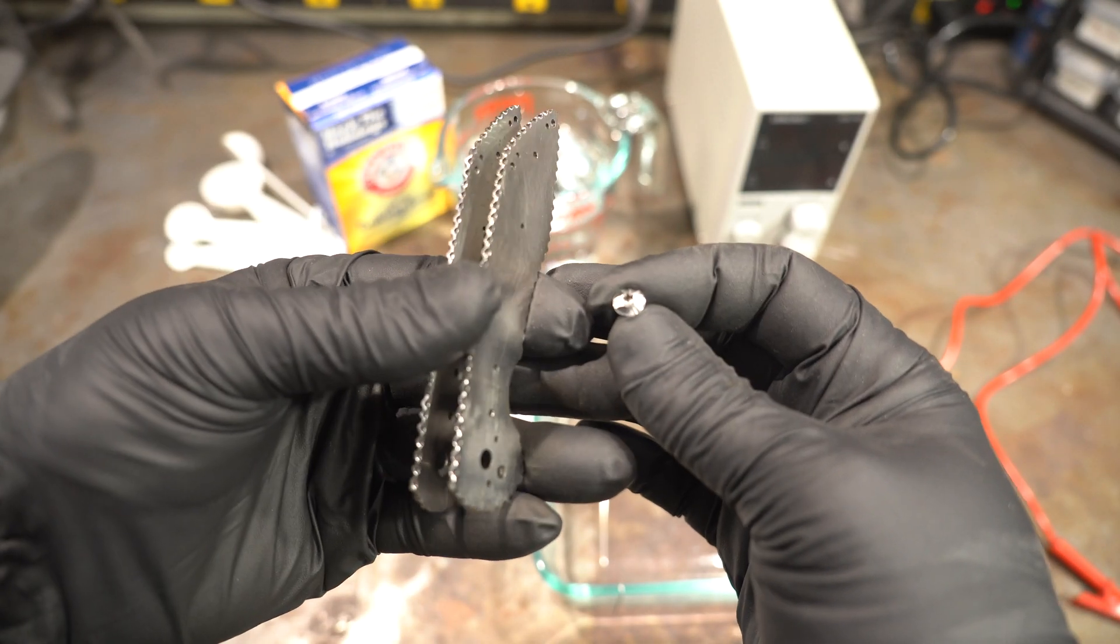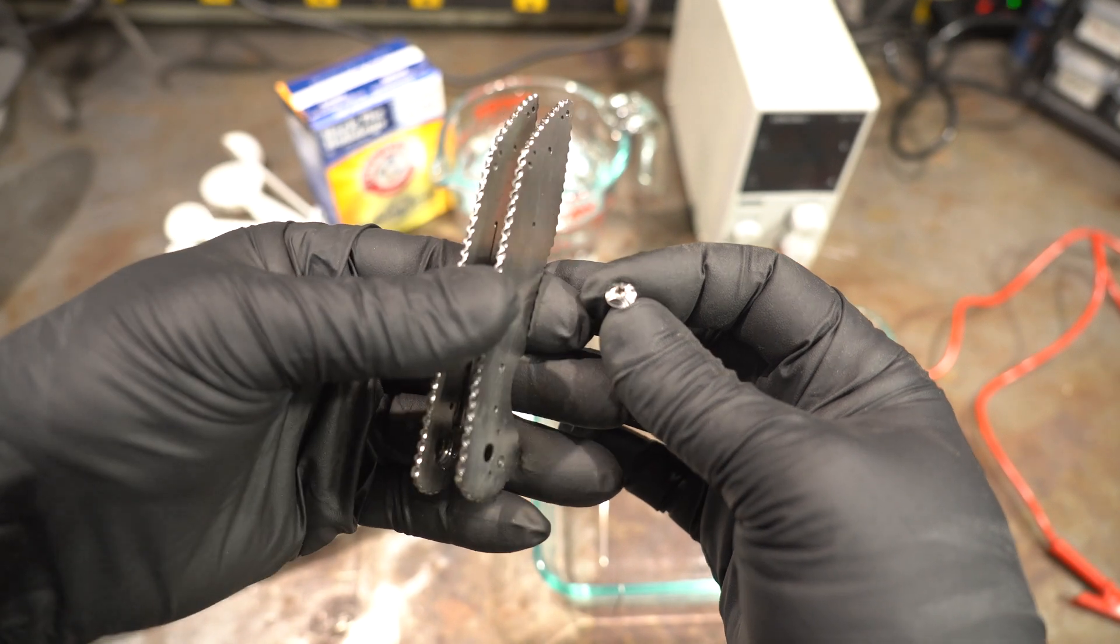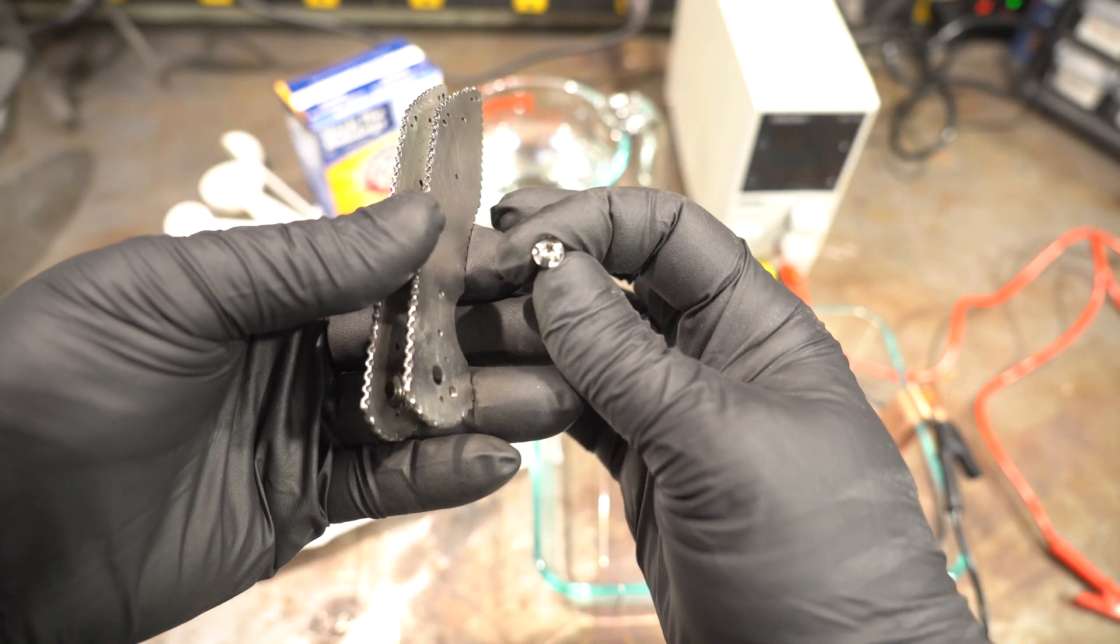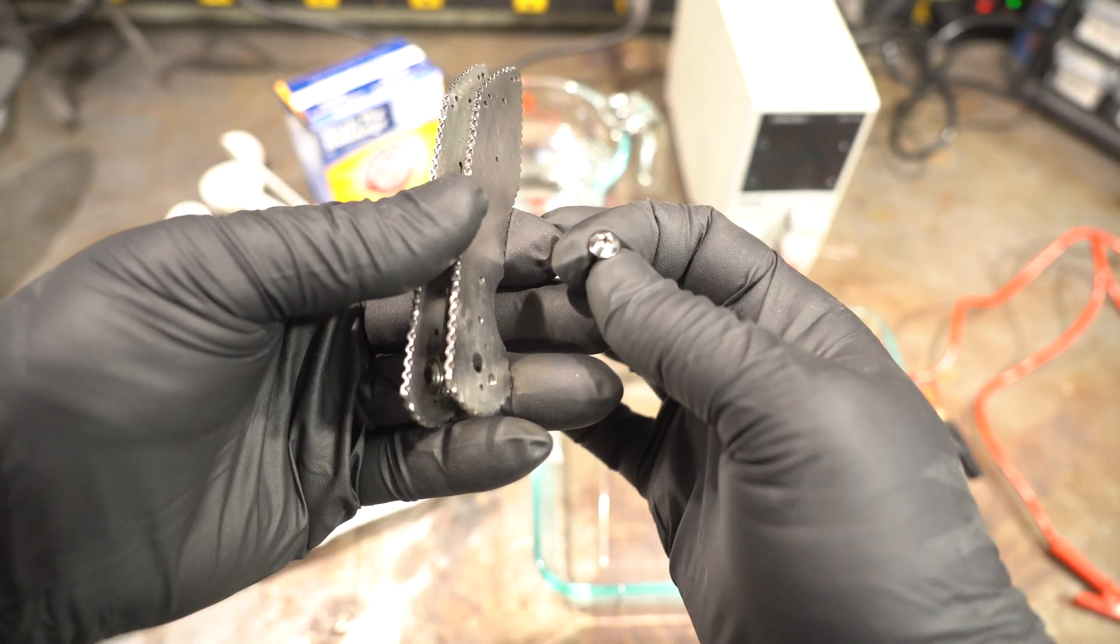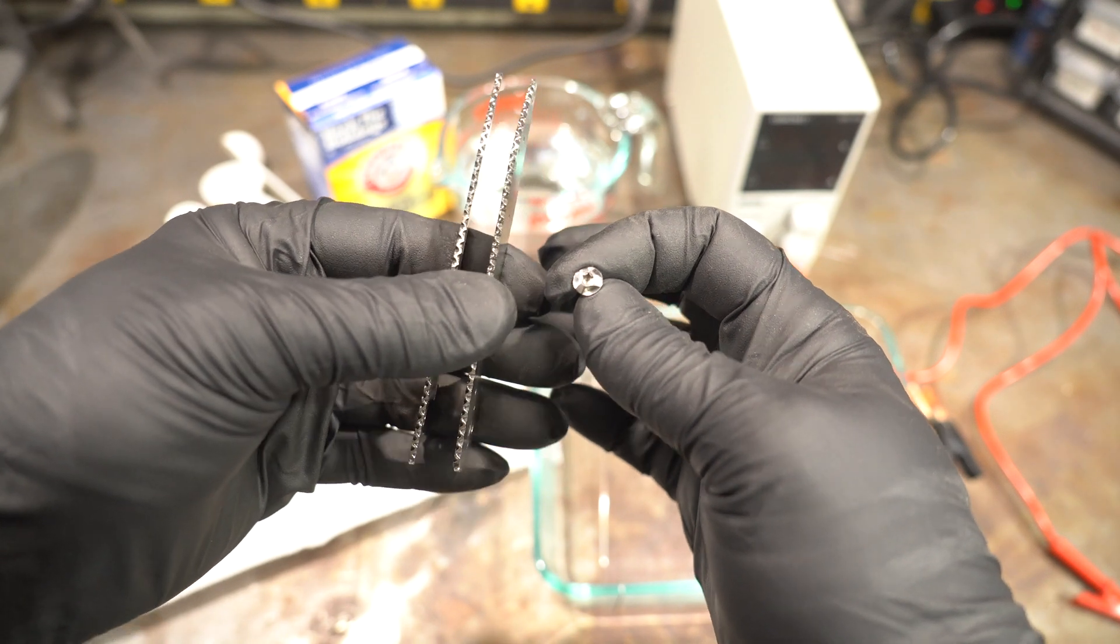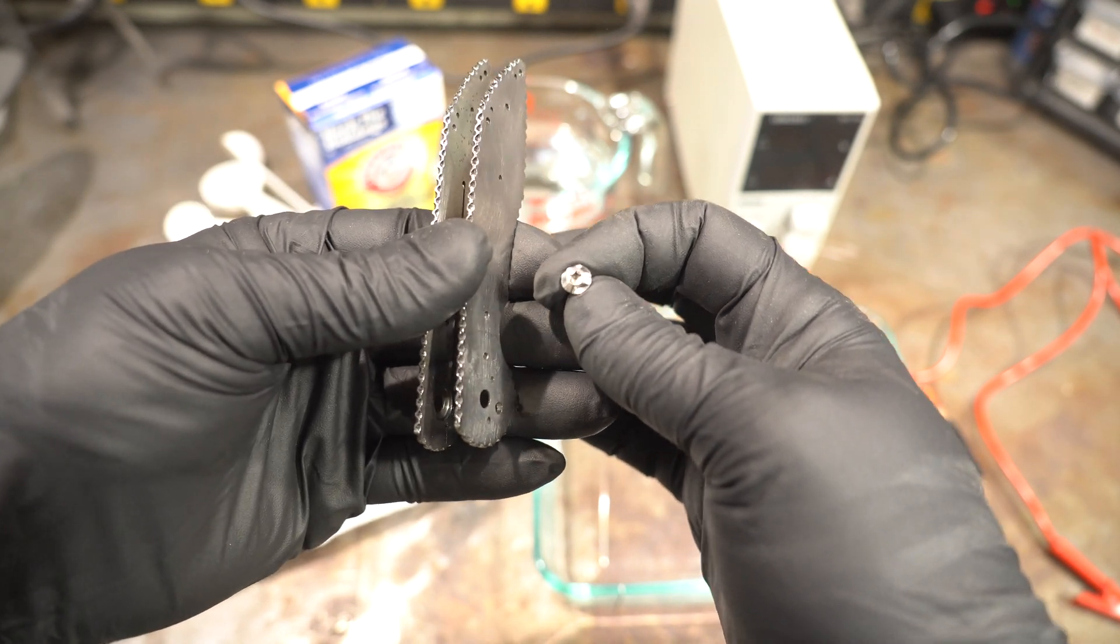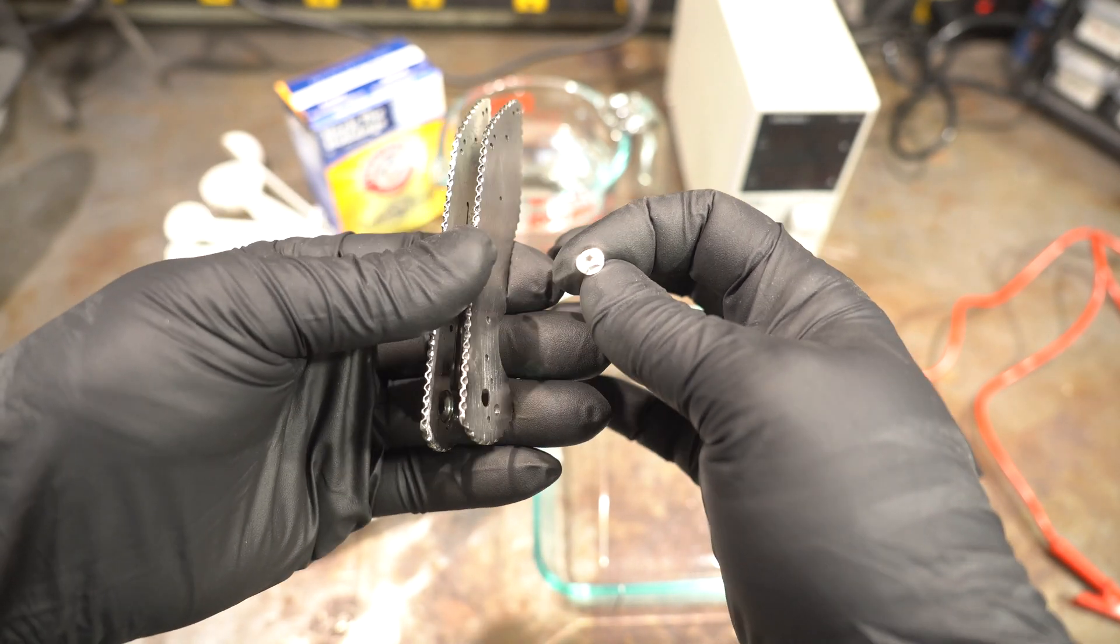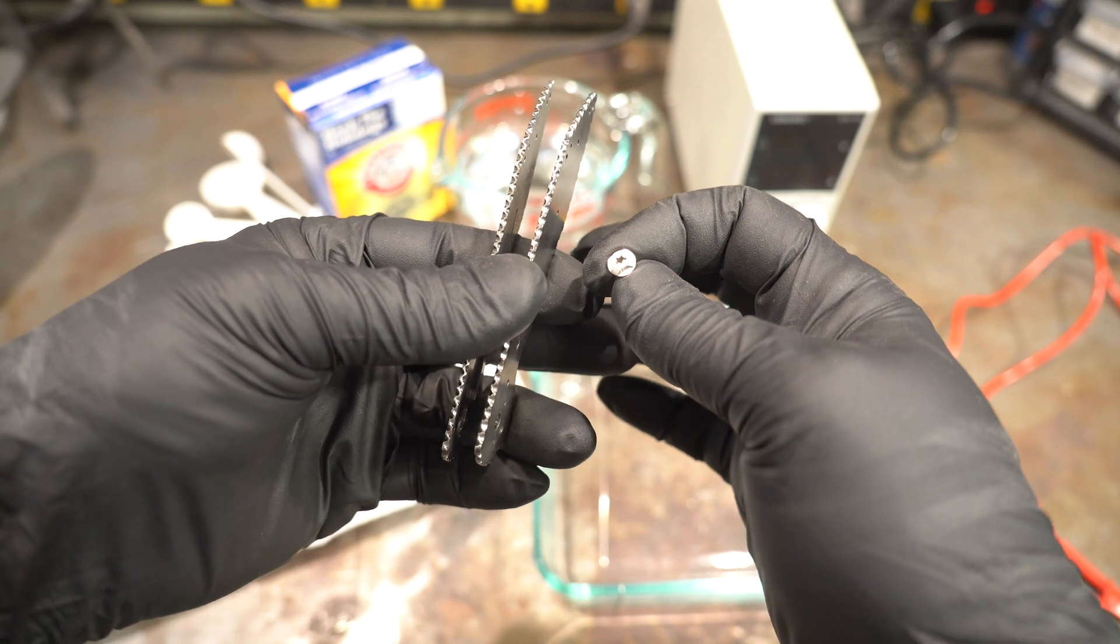So this is what we're going to try and anodize. These are two liners to the folding knife that I'm working on, and the pivot head that I'd like to match the same color. So we're going to be doing them at the same time so that we get the exact same color on all of these pieces. So how are we going to do that?